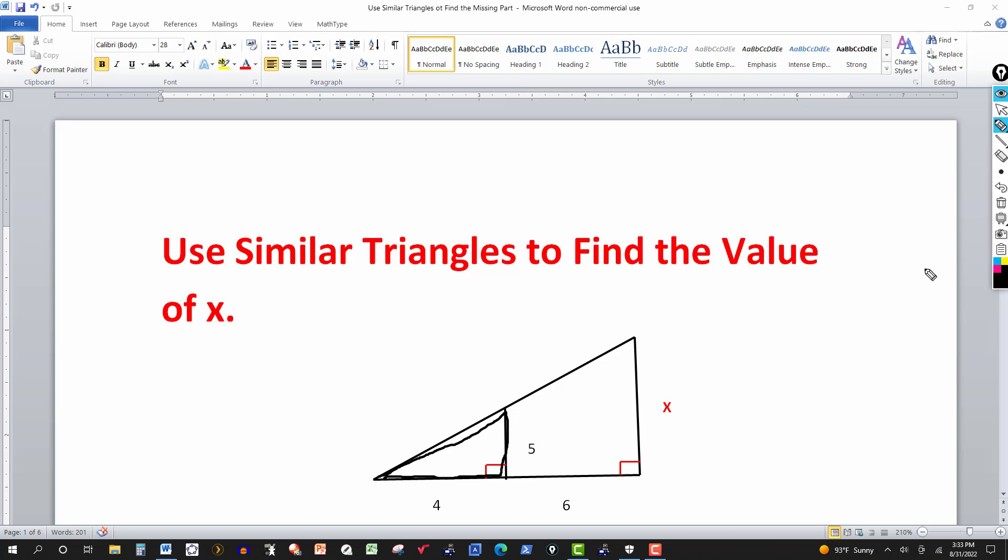So you can see that the two triangles then have one angle corresponding to them that has the same measure. You can also notice that they share an angle. This angle right here is common to both. So two of the angles corresponding to the triangles are equal.